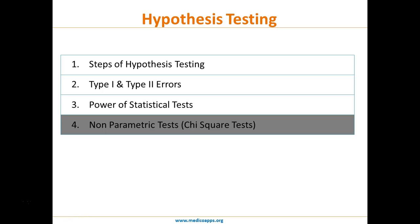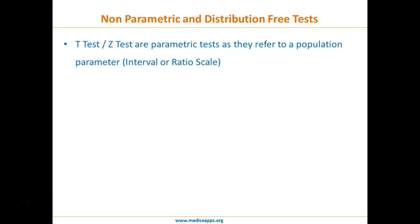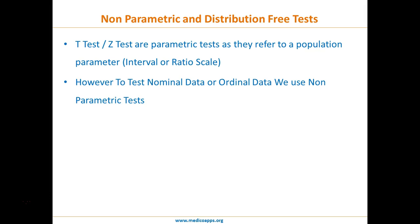Today we are going to learn about non-parametric tests. The main non-parametric test we are going to see is the chi-square test. Earlier we have seen t-tests and z-tests, which are particularly important when testing data on an interval or ratio scale. These tests are based on the assumption that the distribution follows a bell-shaped curve. However, when we have to test nominal or ordinal data, we use non-parametric tests. For any interval or ratio scale, we use parametric tests such as t-test or z-test.